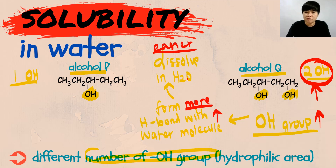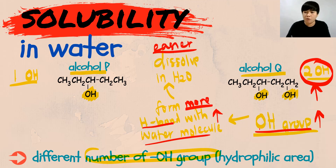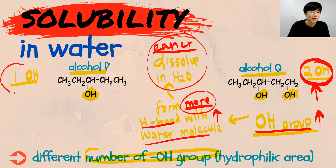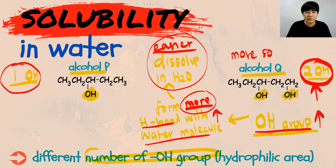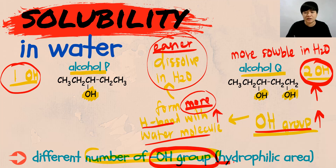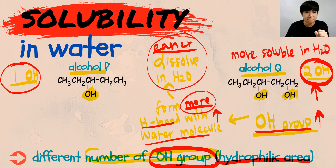Bear in mind: to dissolve in water, you must be able to form hydrogen bonds with the water molecule. The more OH groups you have, the more hydrogen bonds you can form with the water molecule, and your alcohol will dissolve more easily. So between one OH group and two OH groups, alcohol Q will be more soluble in water. That's why we name the OH group the hydrophilic area — because it's the one that forms hydrogen bonds with the water molecule.